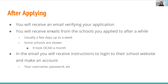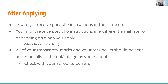After you apply, you'll receive an email verifying your application from the university or college website. You'll also receive emails from the schools you applied to after a while — this would usually take about a few days up to a week. However, some schools are slower; it took OCAD a month. I applied in early November and it took them till December to send me an email about the application. Then the email will probably give instructions to log into their school website so you can make an account — they'll give you your username, password, and all that. You might receive portfolio instructions in the same email or in a different email later on, depending on when you apply. For example, for Sheridan, I received the portfolio instructions about half a month after I applied.